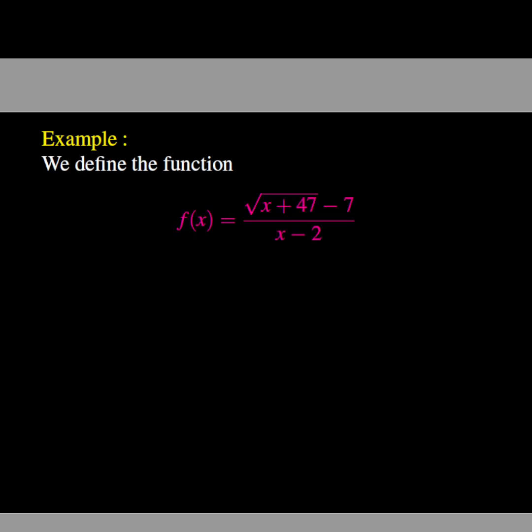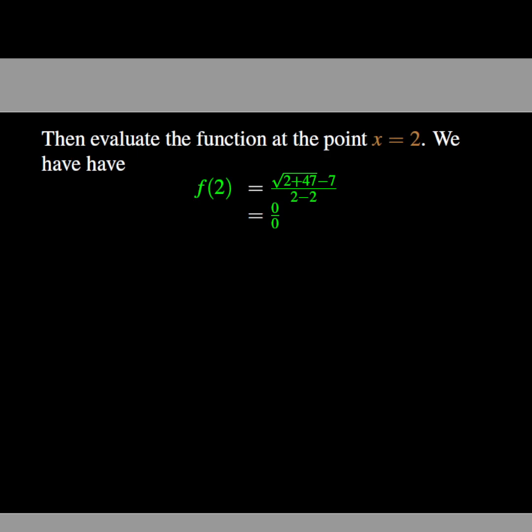We first define the function f(x) as the fraction (√(x+47) - 7)/(x - 2). We try to compute f(2), and easily see that f(2) equals 0/0.